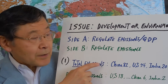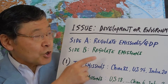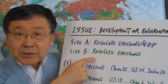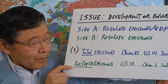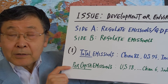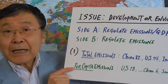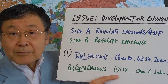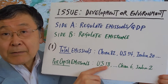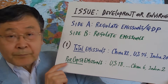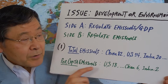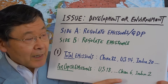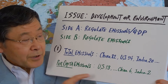So when you look at those statistics, China, along with the United States and India, should regulate the absolute level of emissions, because the numbers are huge. Whereas if you look at per-capita emissions, there is a difference between advanced economies like the United States, which has a very high number of per-capita emissions, and developing economies like China and India, which have relatively low numbers.